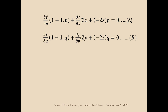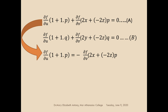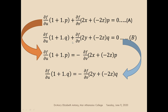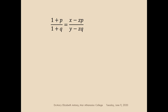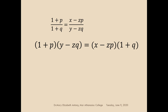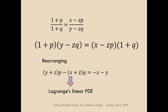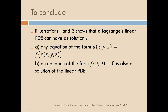Now we need to eliminate dou f by dou u and dou f by dou v from equations A and B. Rearranging and dividing both equations, dou f by dou u and dou f by dou v cancel, giving: 1 plus p over 1 plus q equal to x minus zp over y minus zq. Cross-multiplying and rearranging, we get: y plus z into p minus x plus z into q equal to minus x minus y. This is of the Lagrange's linear PDE form, a linear PDE of the form Pp plus Qq equal to R. From illustrations 1 and 3, Lagrange's linear PDE has solutions of the form u equal to f of v, or of the form f of v equal to 0.